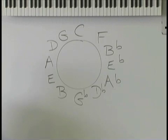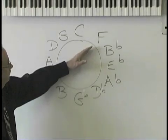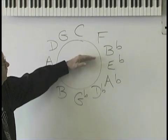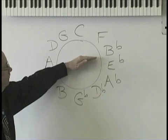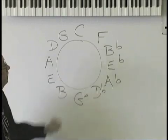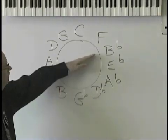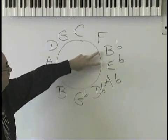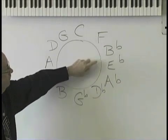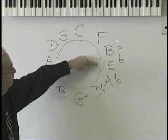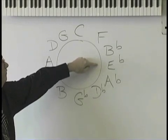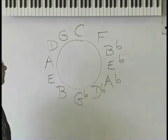The name of the flat is B-flat. See the key of F? The name of the flat that's in the key of F is one to the right. Two o'clock, key of B-flat has two flats. The flats are B-flat and E-flat. See how easy?